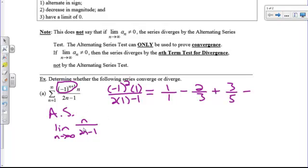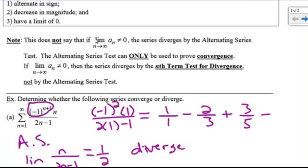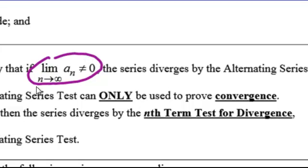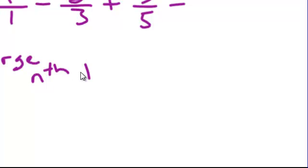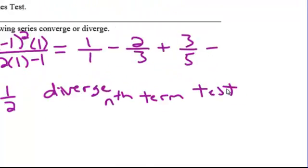We have even powers here. Using the leading-term comparison (Bobo/Bot/Beatsy), the degrees match, so this equals 1/2. This limit is not 0, so this diverges by the nth term test. You must check this first. If that does not equal 0 — and in this instance it equals 1/2 — this diverges by the nth term test. So even if we have an alternating series, that does not mean it's going to converge.